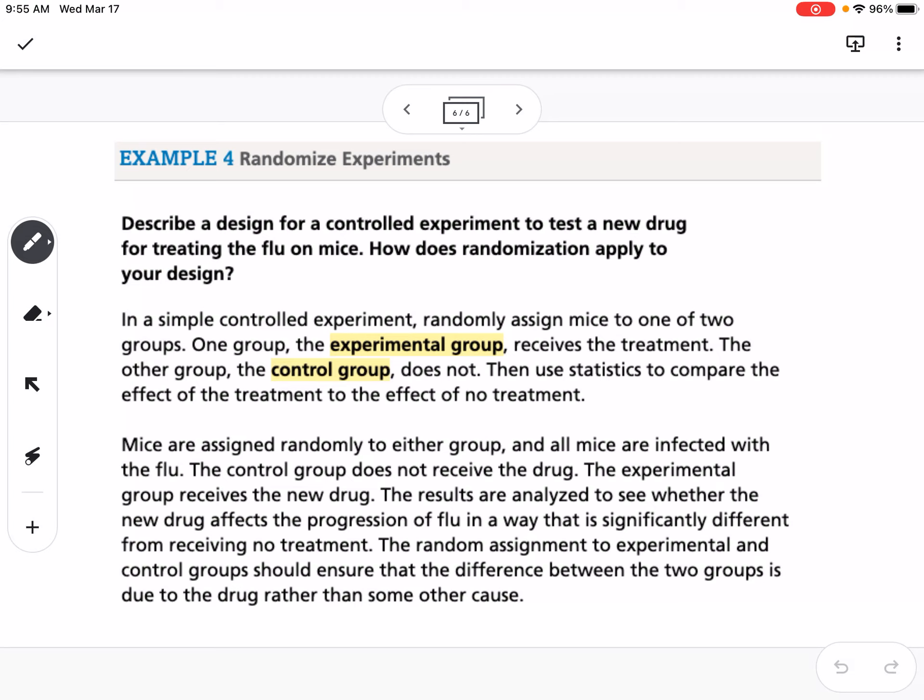Our last one is to describe a design for a controlled experiment to test a new drug for treating the flu on mice. How does randomization apply to your design? This would be an experiment. You could randomly assign the mice into two groups, an experimental group that's going to receive the treatment, and then the control group that doesn't, and then using statistics to compare the effect of the treatment on each group. It's randomization because you're randomly assigning the mice into the group.